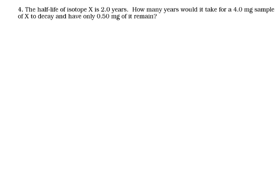The half-life of an isotope X is two years. How many years would it take for four milligrams to decay, to only have 0.5 milligrams of it remaining? Well, we're starting off with four. After one half-life, we'd have two. After two half-lives, we'd have one.